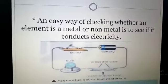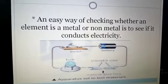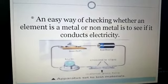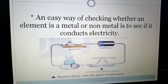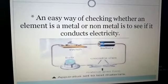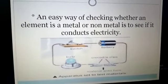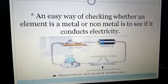An easy way of checking whether an element is a metal or non-metal is to see if it conducts electricity. You can see this diagram showing the circuit apparatus set to test materials: switch, bulb, crocodile clips, and battery. This is the electrical circuit.